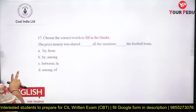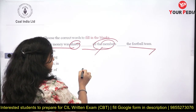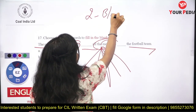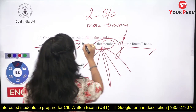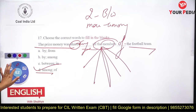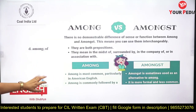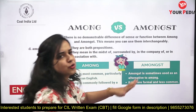Question seventeen: 'Prize money was shared dash all the members dash the football team.' When there are two people, use 'between'; for more than two, use 'among.' The answer is 'among... of the football team.' Among and amongst are both prepositions with no demonstrable difference — among is most commonly used, whilst amongst is rarely tested.